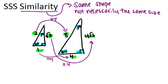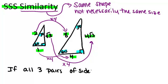So SSS similarity is one of those shortcuts and what it says is if all three pairs of sides are proportional, so that's where the SSS comes in for side side side, all three pairs of sides, then...